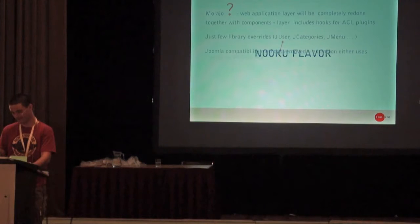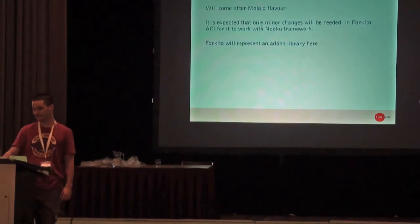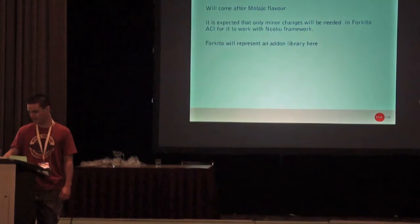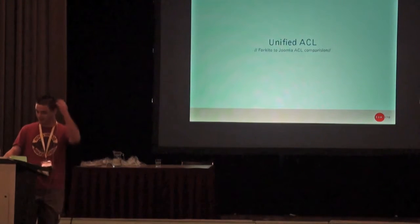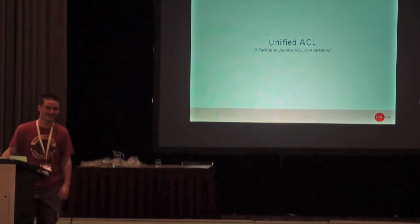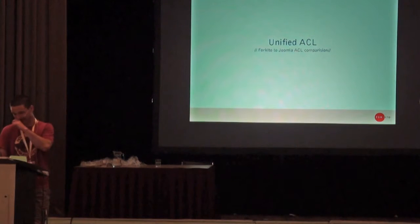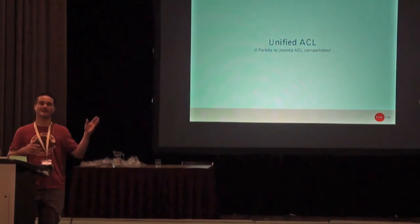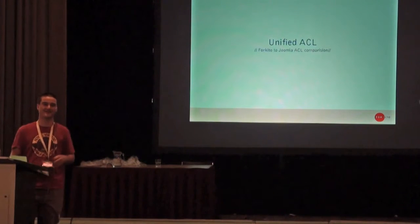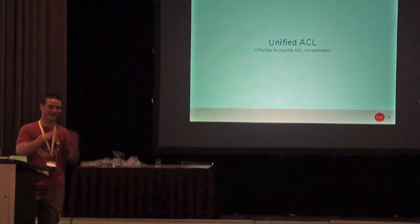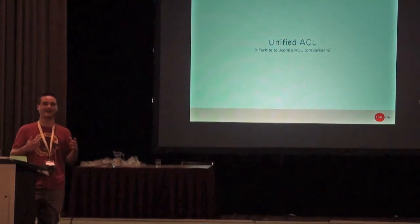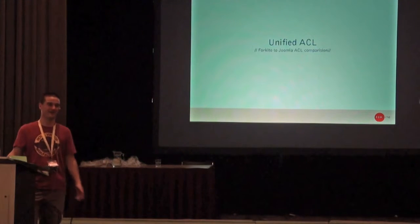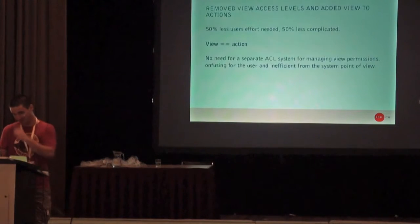The code can be shown later if anyone wants. The Nuku flavor will come from the Molagio flavor — ForKeto will present an add-on library there. Now let's proceed to what has been changed versus Joomla ACL. It's not a completely new ACL — basically, as the session title says, it's cutting corners, rounding the wheel, making it really round again — an improvement of Joomla ACL with a few things that were obviously wrong changed.